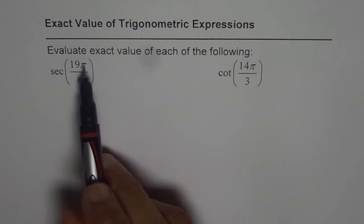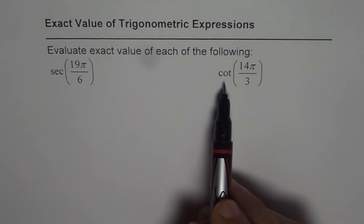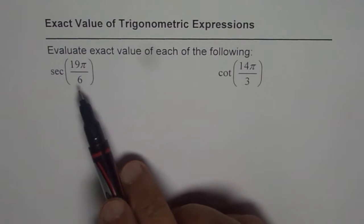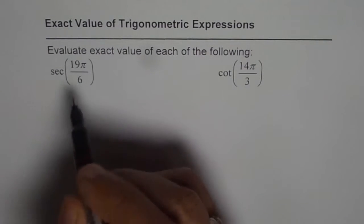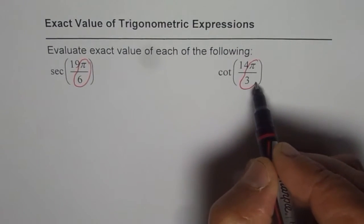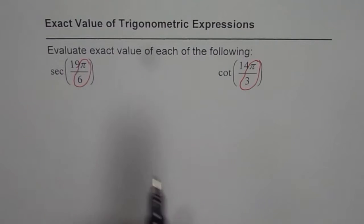We have secant 19π by 6 and cotangent 11π by 3 here. Now here we can see that the acute angle is this angle, π by 6 or π by 3. Now when we say exact value, then we should really look into our special triangles.